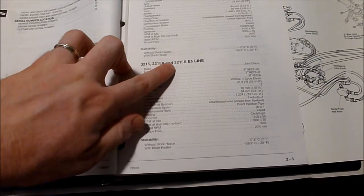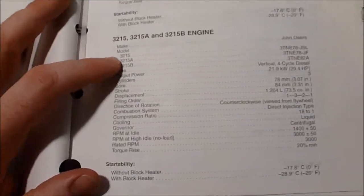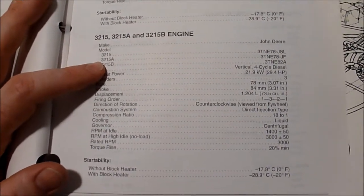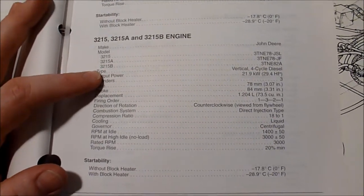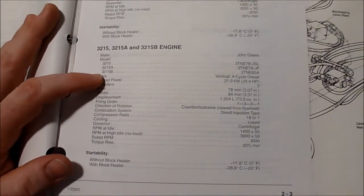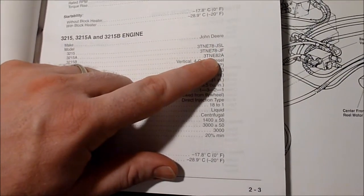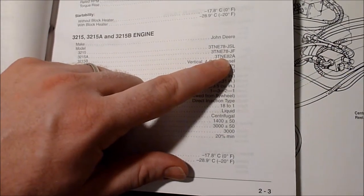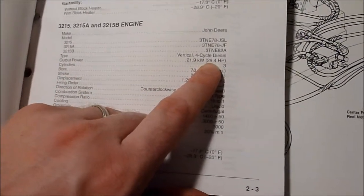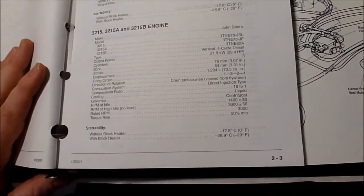First page marked: 3215, 3215A, and 3215B. The 3215 had a 3TNE78JSL. The 3215A had the 3TNE78JF, and the 3215B had the 3TNE82A. I'm guessing maybe this is the 25 horsepower motor, this is the 29 horsepower motor, and this is the 31 or 32 horsepower motor. Power output's listed at 29.4 horsepower along with bore and stroke.